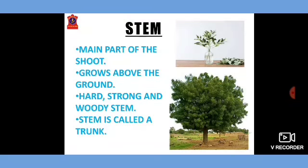Stem. Stem is another main part of the shoot. Stem connects the root with the other parts of the plant. Stem grows above the ground. Trees have a hard, strong and woody stem which is known as a trunk.